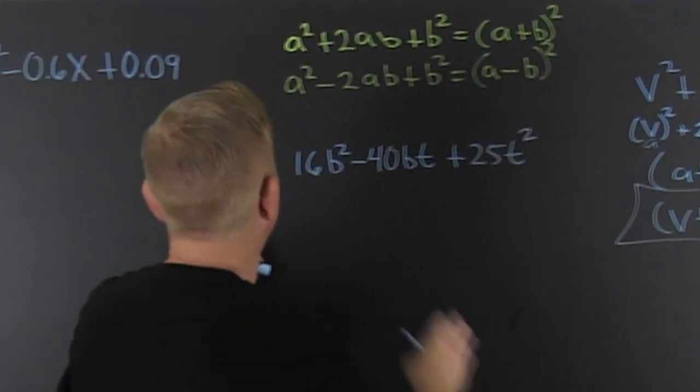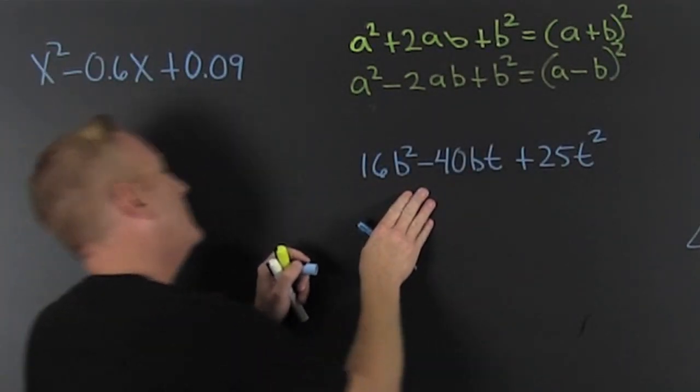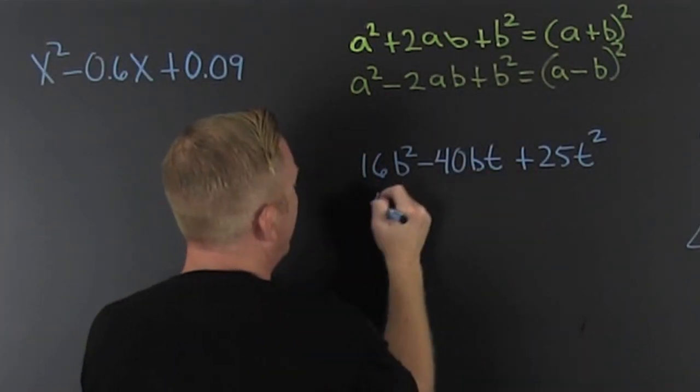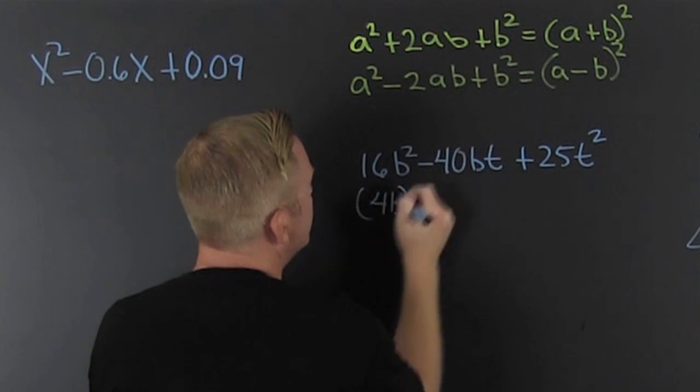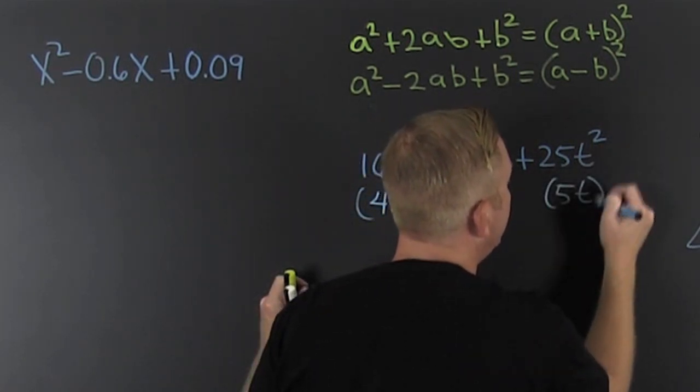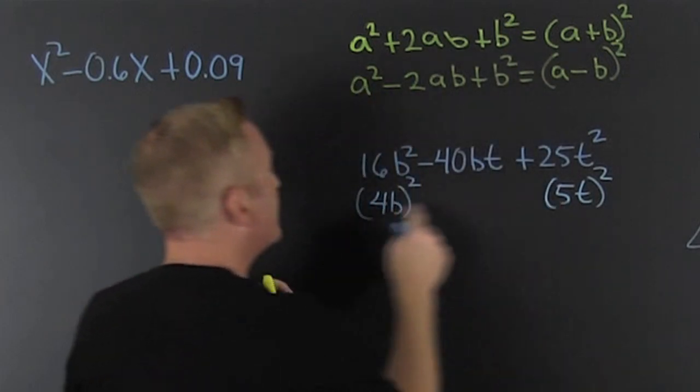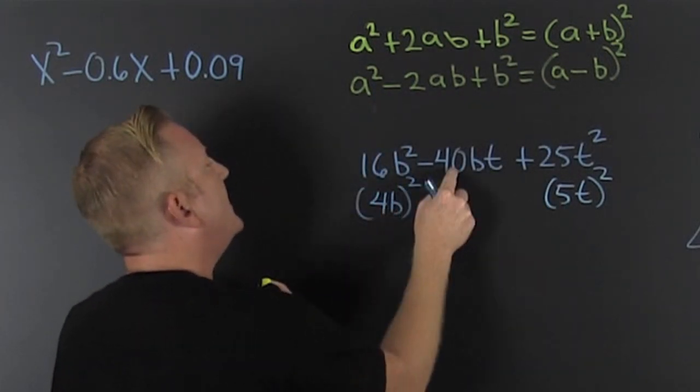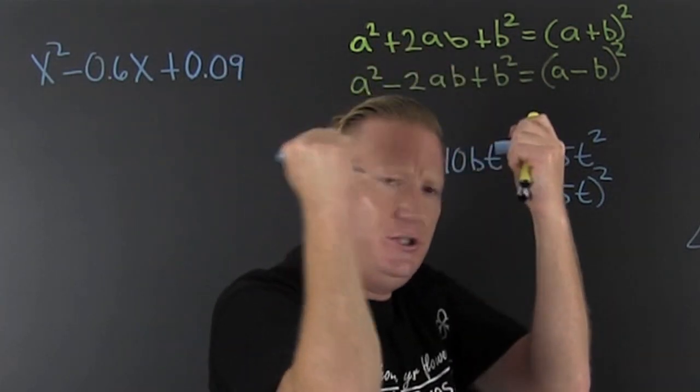What's next? What do we want to do? Intermediate example over here. Is this something squared? Yeah. That's 4b squared. Is this something squared? Yeah. That's 5t squared. Then I take this one times that one, 20, and double it. Is it? It's a perfect square.